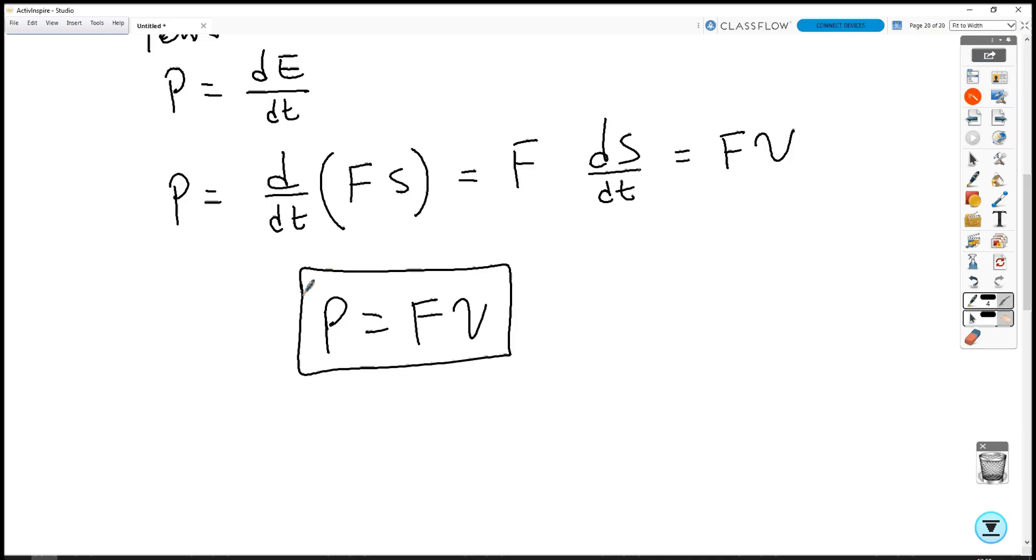And now if we feed that back into E equals Pt. So power is Fv. If I do F times v times t, what does that give us? It gives us Fs because vt is S, assuming there's no acceleration.